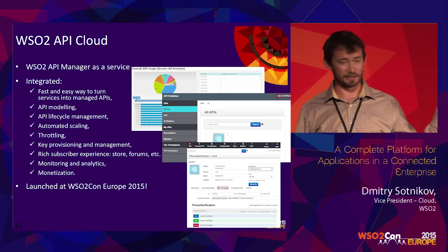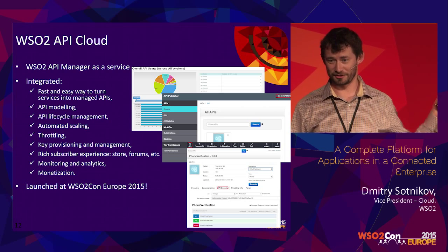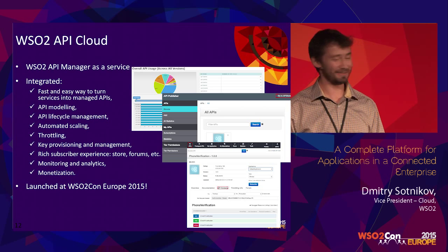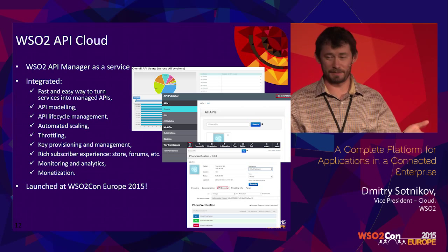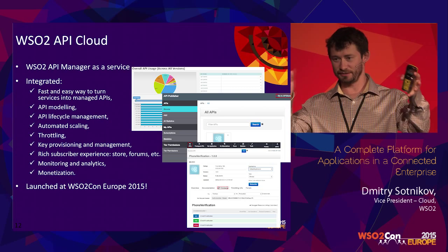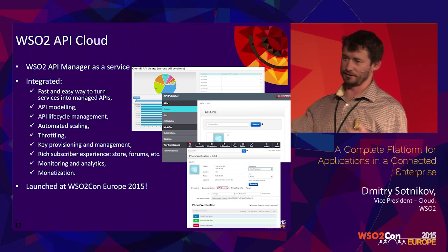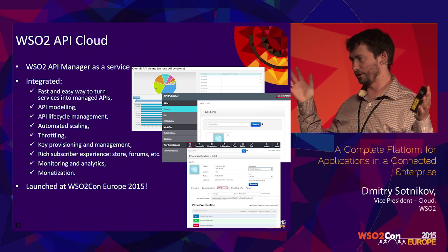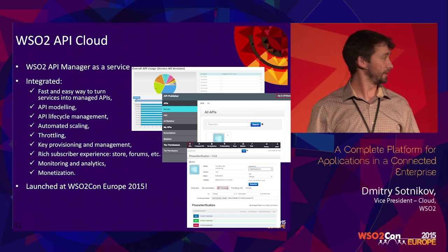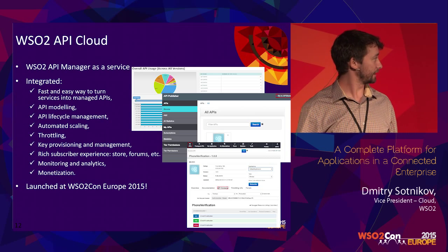API Cloud is what was mentioned by Sanjiva in his keynote yesterday. We launched it in beta a year ago and launched it commercially this week at this show. We already have paying customers, which is a good thing. It's basically API manager — one of the most popular products we have — run multi-tenant as a service. You get all the major capabilities of API manager: throttling, your subscriber store, all the social features, forums, policies, monitoring, analytics. All of that is available as a service. You just go there, sign up, and start using it.